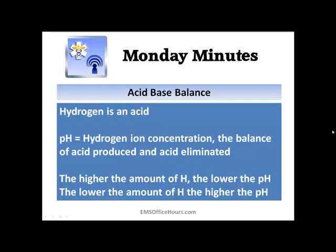Acid-base balance — this is something that people struggle with. Hydrogen is essentially an acid. Your pH, which is the hydrogen ion concentration, is the balance of acid that's produced and acid that's eliminated. The higher the amount of hydrogen, the lower the pH. And the lower the amount of hydrogen, the higher your pH is going to be. These are the things you're going to be asked to recall. We'll get into alkalosis and acidosis and respiratory versus metabolic in the next video, but for right now build a baseline understanding of hydrogen, how it's an acid, and how it regulates pH balance.